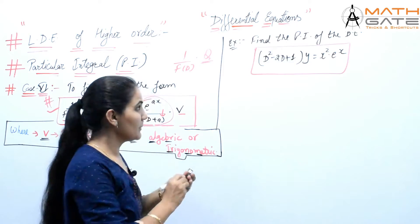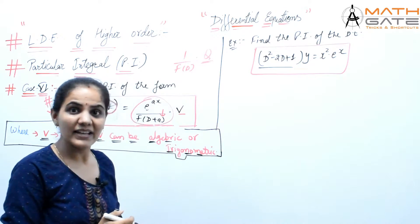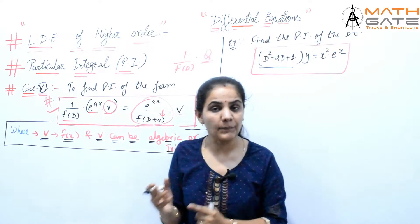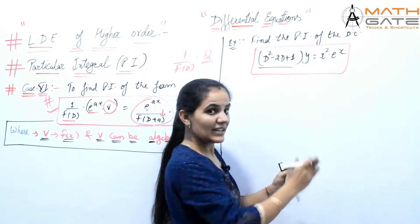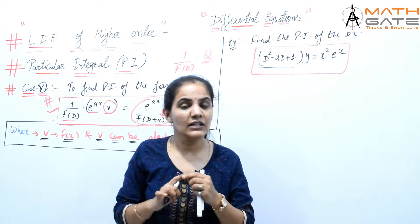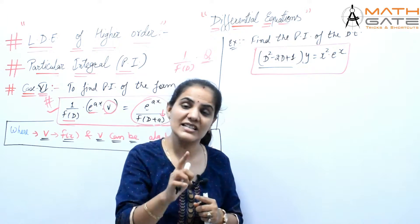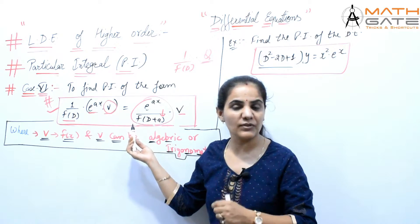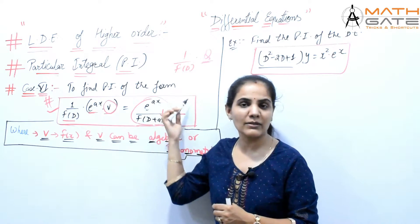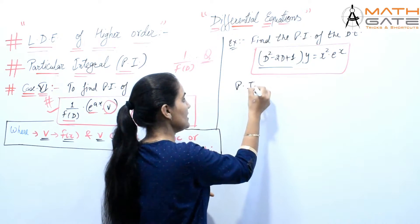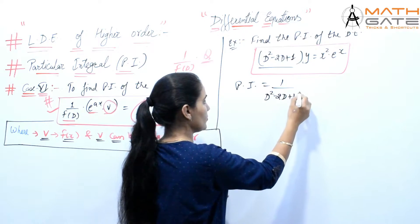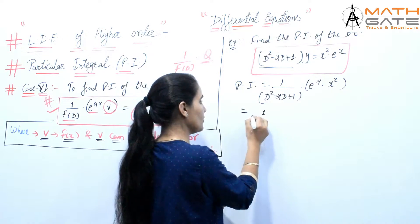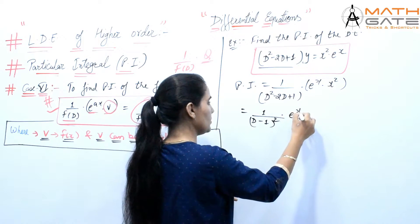Let's discuss this example: find the PI of (D² - 2D + 1)y = x² · e^x. In this example you will see that the question has both x squared and e to the power x together — one exponential is fixed and with that exponential there is an algebraic function. So PI equals 1 by (D² - 2D + 1) into e^x and x². We can write D² - 2D + 1 as (D - 1)² into e^x and x².